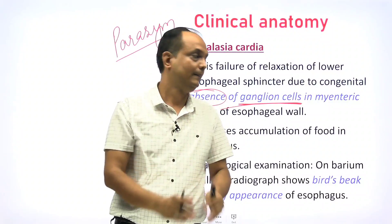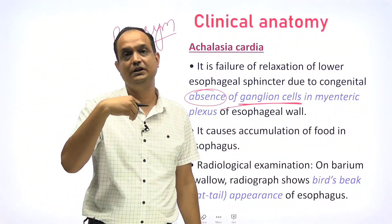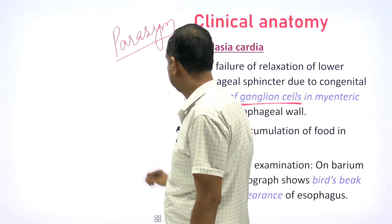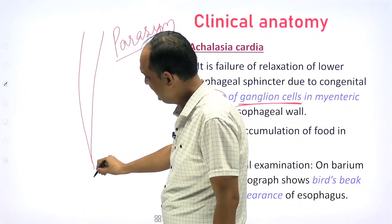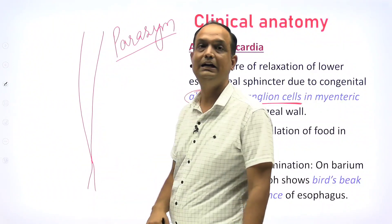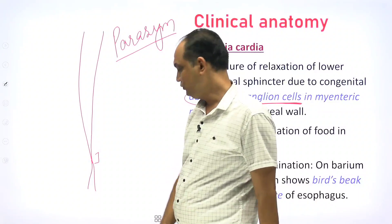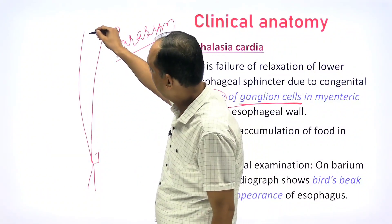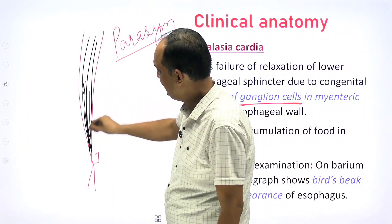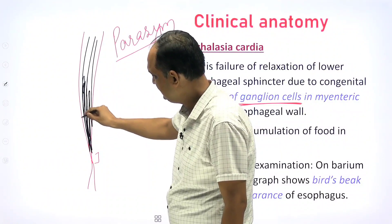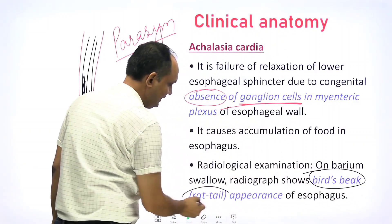Because the parasympathetic system is not working, relaxation does not occur and food accumulates at one end. On a barium study, the barium also cannot pass downward. The lumen of the esophagus does not dilate at one end because the myenteric plexuses are absent in that segment. Whatever barium the patient swallows accumulates in that area, producing the 'parrot beak appearance,' also called the 'bird beak appearance' or 'rat tail appearance.'